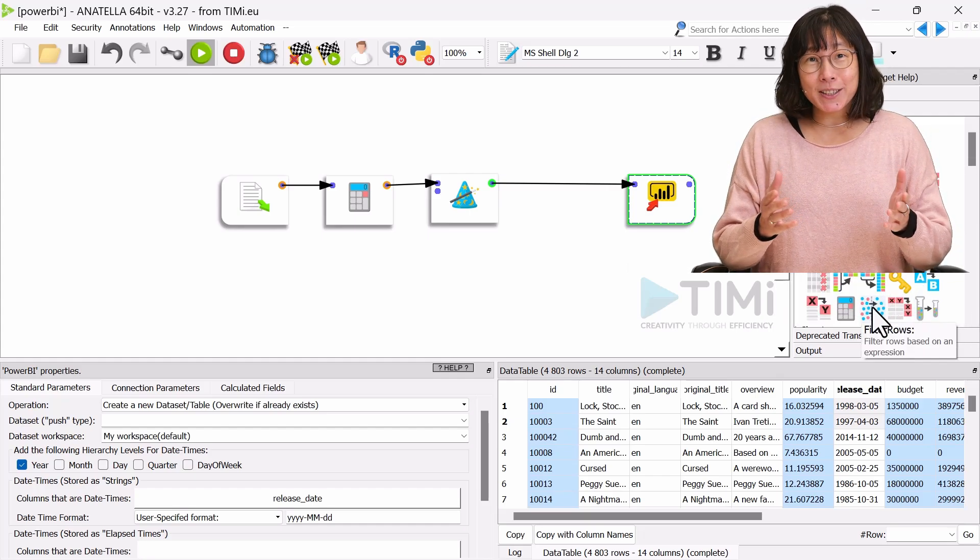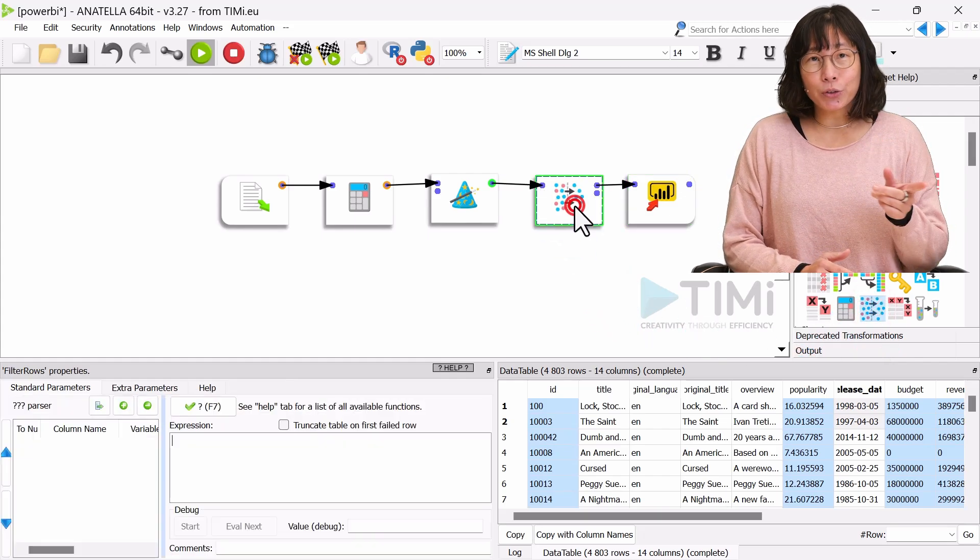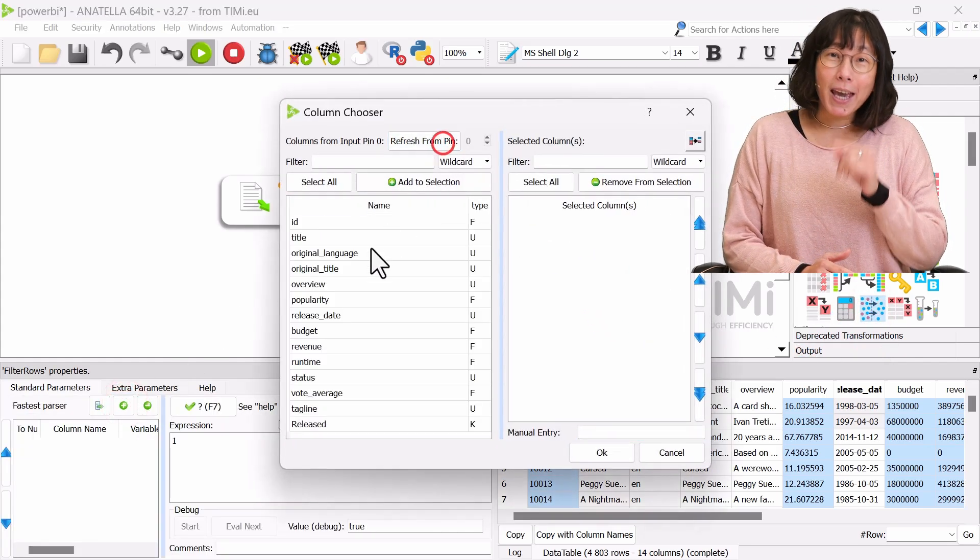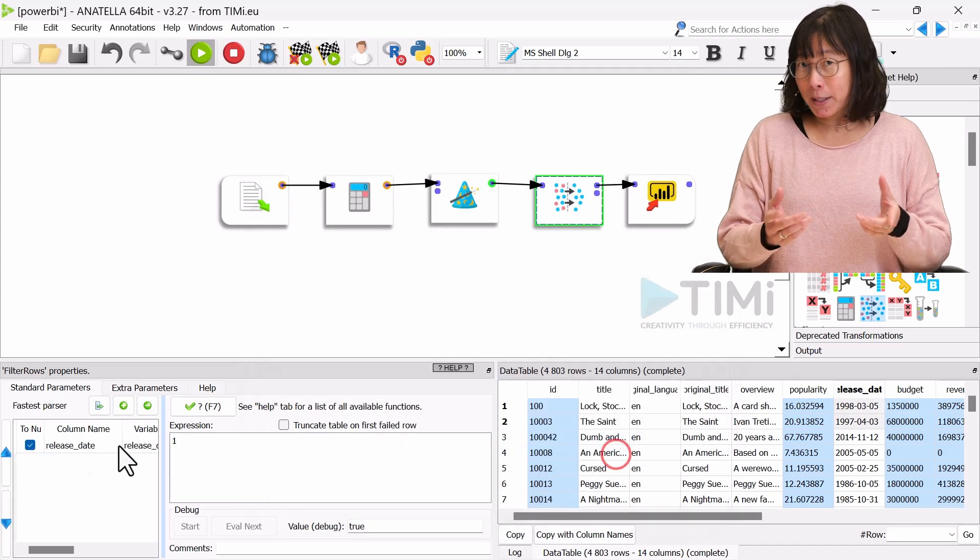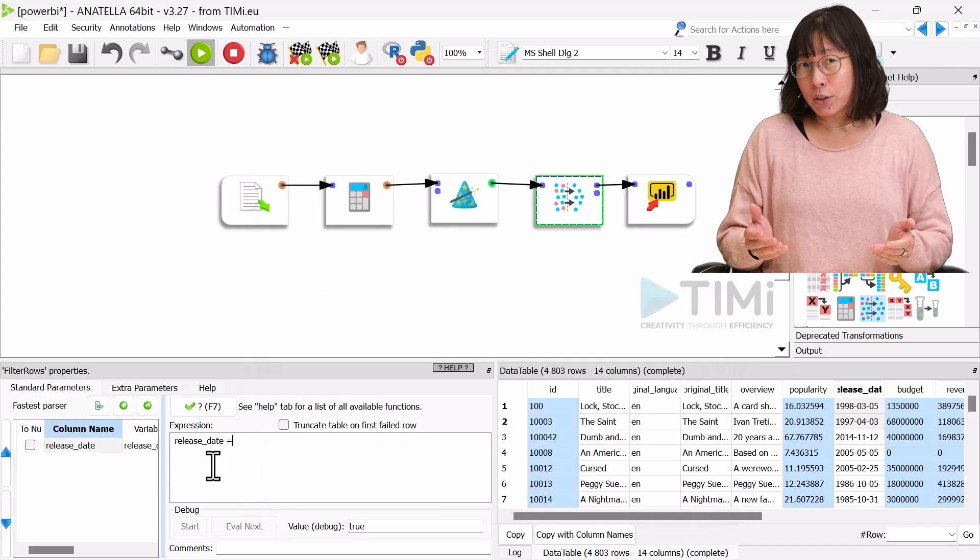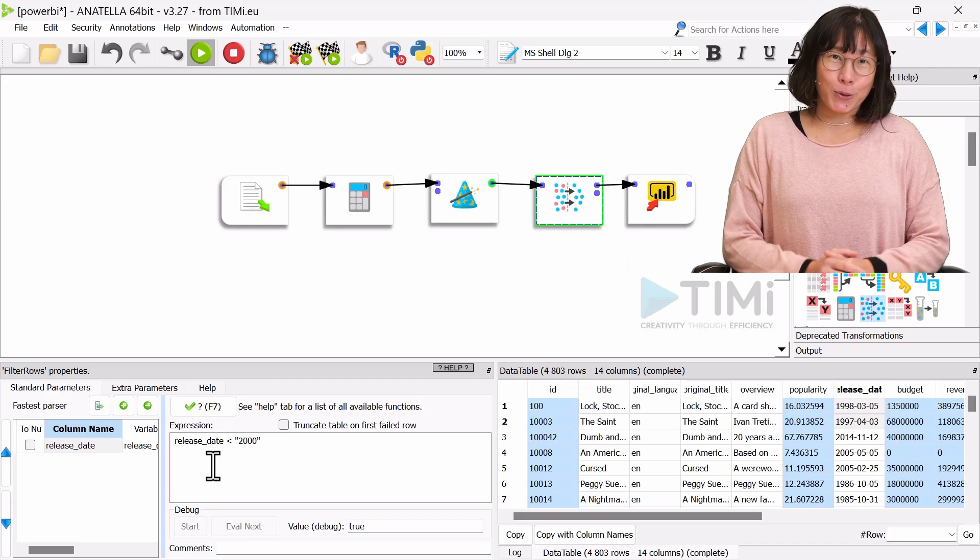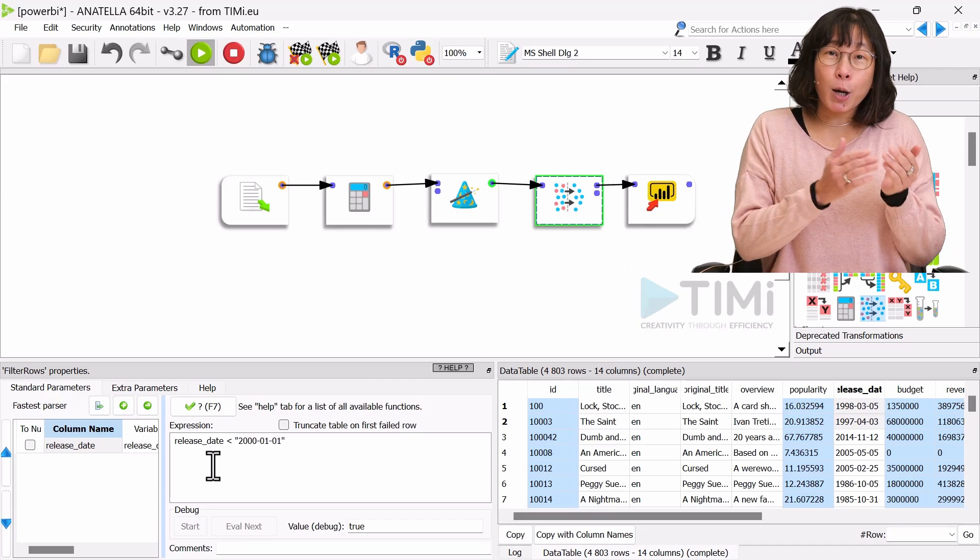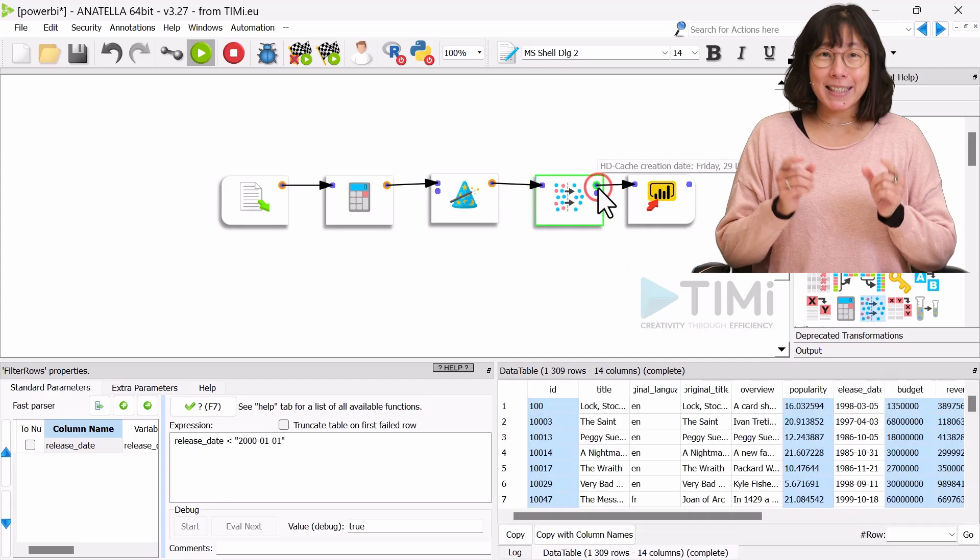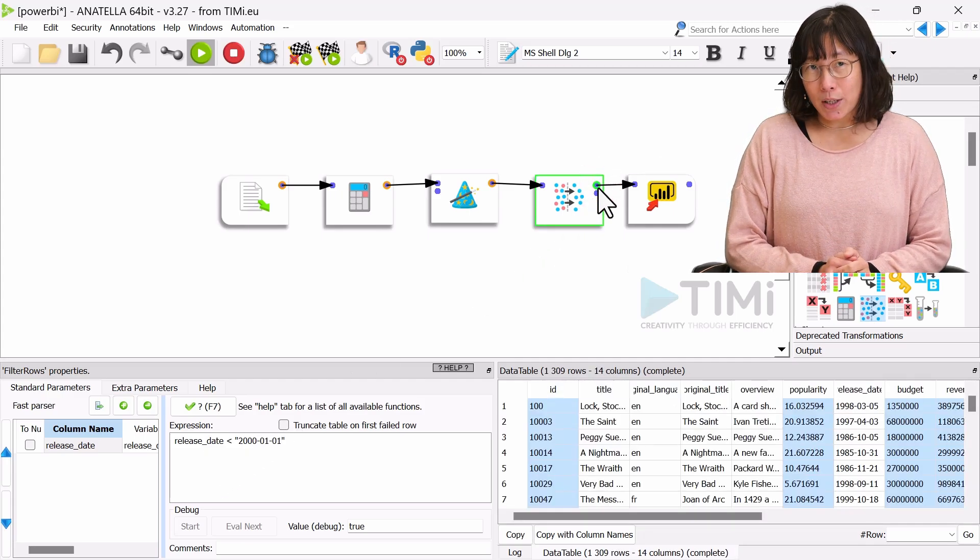You can skip these steps if your dataset does not have dates or boolean columns. Ready to proceed? Oh, hold on still a little. To be able to illustrate the append rows functionality of Anatella later on, we split the dataset into two using a filter box. For example, let's upload now only the movies released before January 2000.